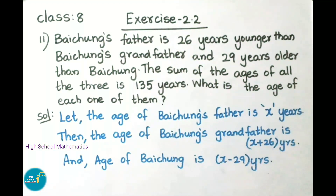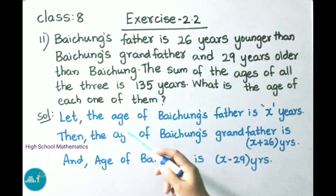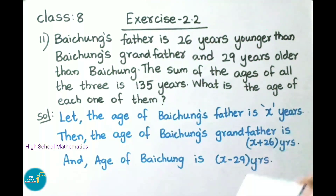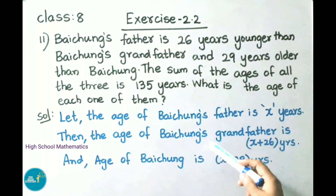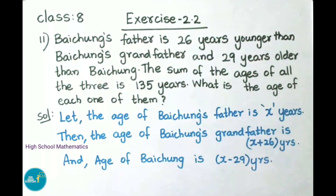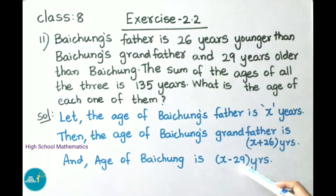Let us see the solution. Let the age of Bai Chung's father be x years. Then the age of Bai Chung's grandfather is x plus 26 years, and the age of Bai Chung is x minus 29 years.